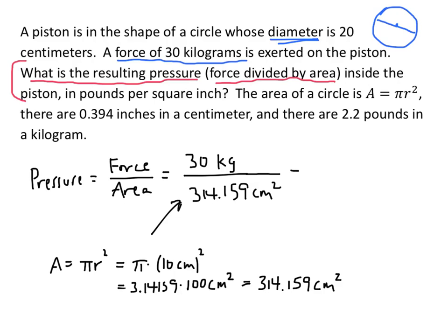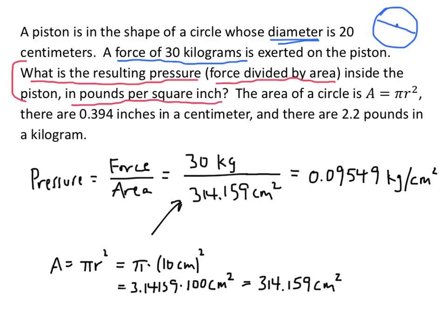If we divide on our calculator — 30 divided by 314.159 — we get 0.09549. The units are kilograms divided by centimeters squared, so that's kilograms per square centimeter. Which would be great, except they want the answer in pounds per square inch, so we've got quite a bit of work left to do.